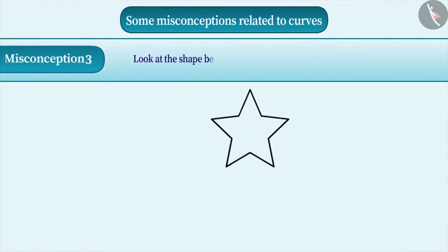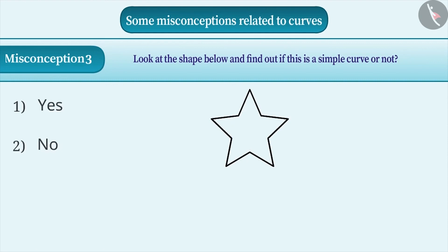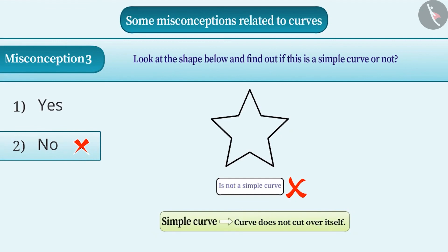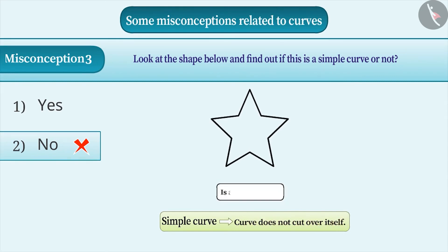Misconception 3: By looking at the figure below, find out whether it is a simple curve or not. Many students go with the misconception that the closed curve cuts itself, so it cannot be a simple curve. But this is an incorrect understanding, so option 2 is the incorrect answer. When a curve does not cut itself, it is known as a simple curve. If we look at this curve, at no point does it cut itself. Therefore, it is a simple curve, and option 1 is the correct answer.